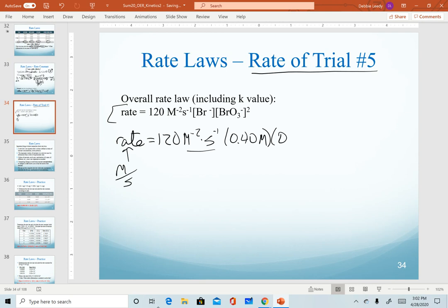And I forgot we changed numbers there. So the 0.40 for bromide, the 0.040 for bromate. And again, remember, bromate gets squared. That's both the quantity and the units that get squared here.